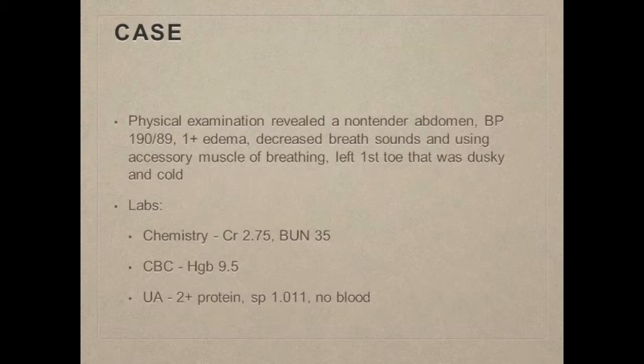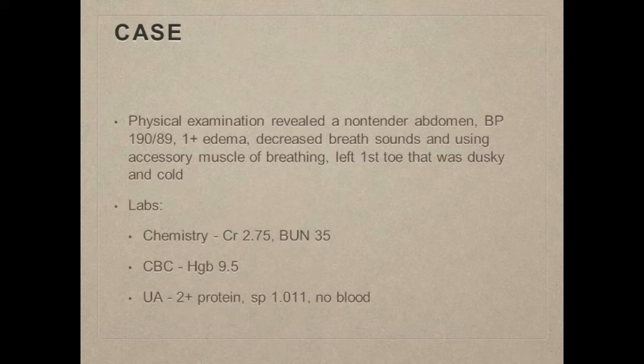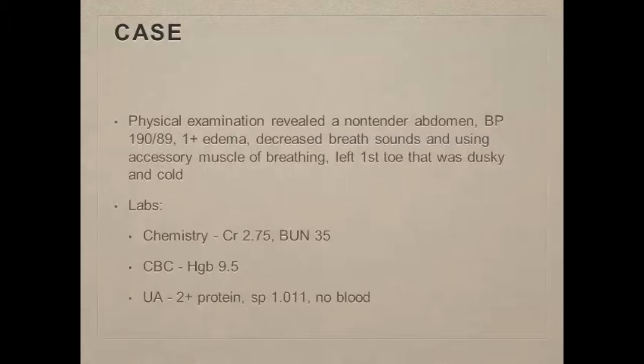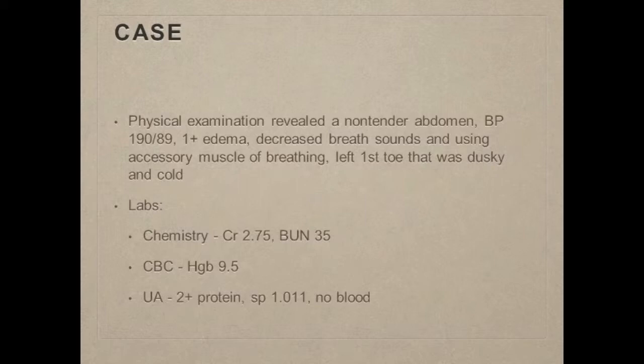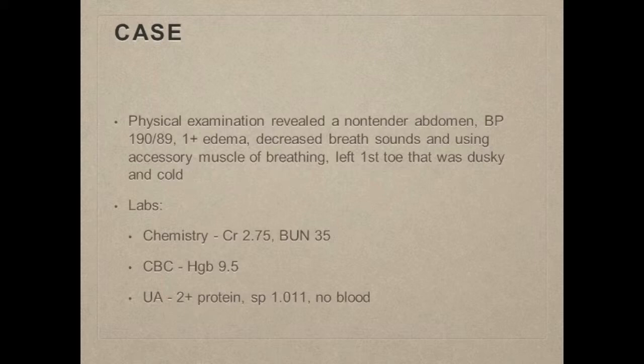Her laboratory values — the only abnormal findings: her baseline creatinine was 2.2, and upon presentation it was 2.75, which constitutes acute kidney injury by the standard of 0.3 above baseline. Her BUN was 35, so we considered whether her nausea and vomiting could be associated with uremia, though her urea nitrogen was not that elevated. CBC showed hemoglobin of 9.5, attributable to anemia of chronic disease secondary to her chronic kidney disease. Her urinalysis was pretty bland, showed a little bit of protein, no blood, and specific gravity of 1.011.